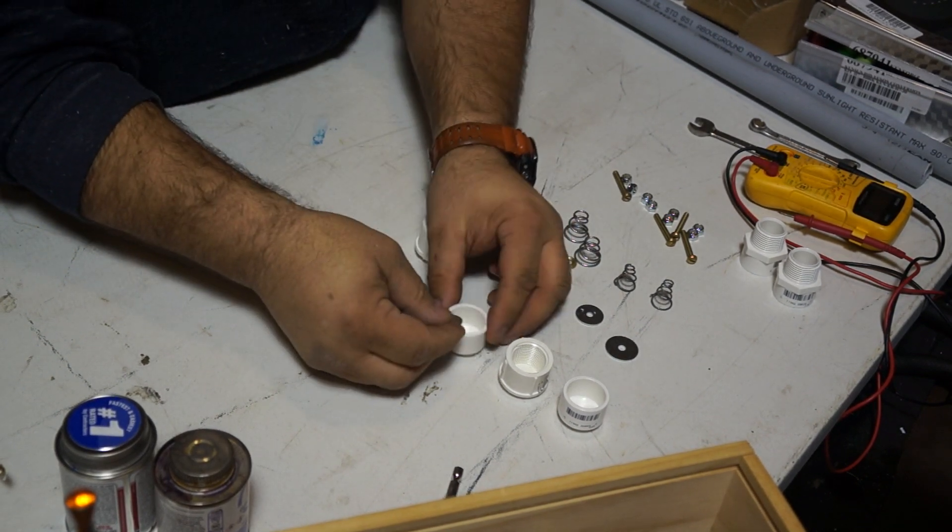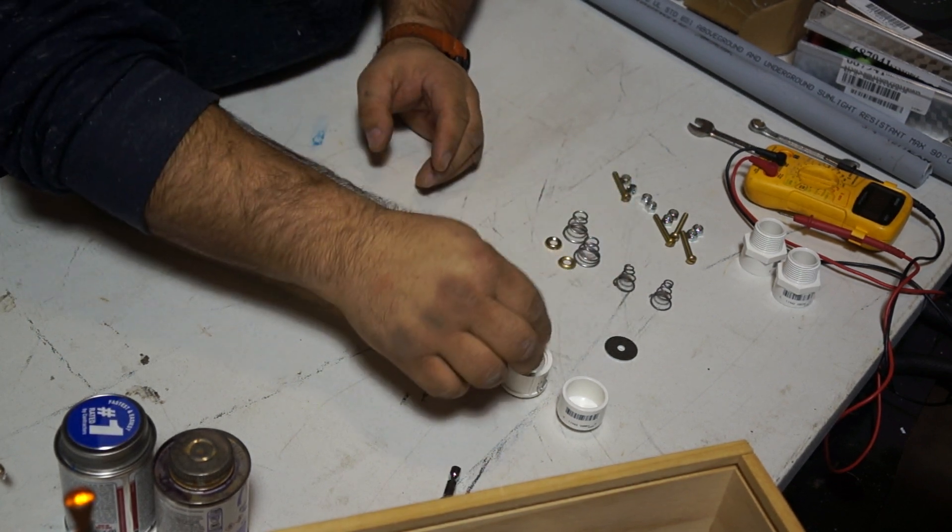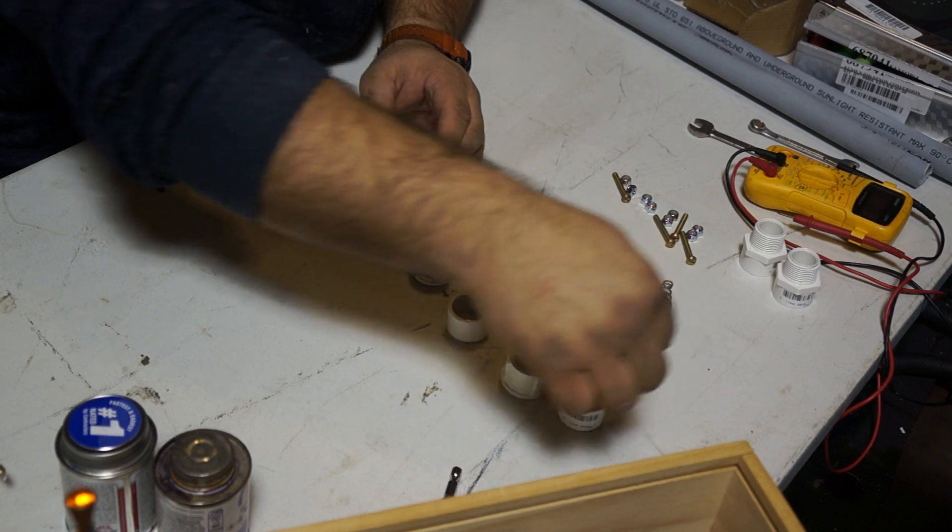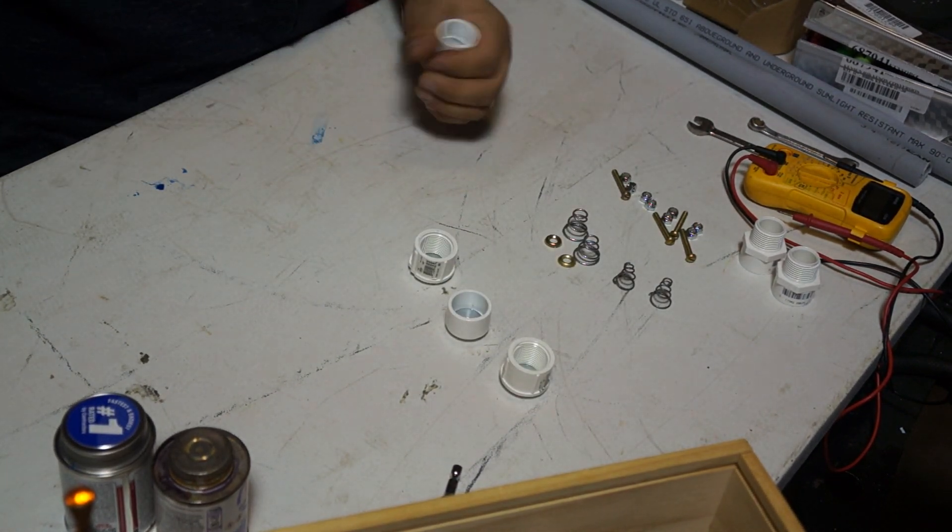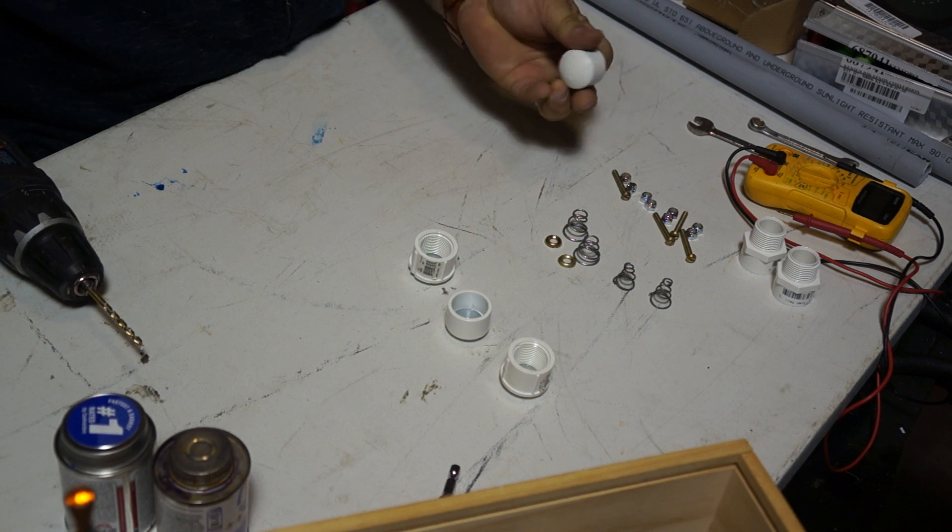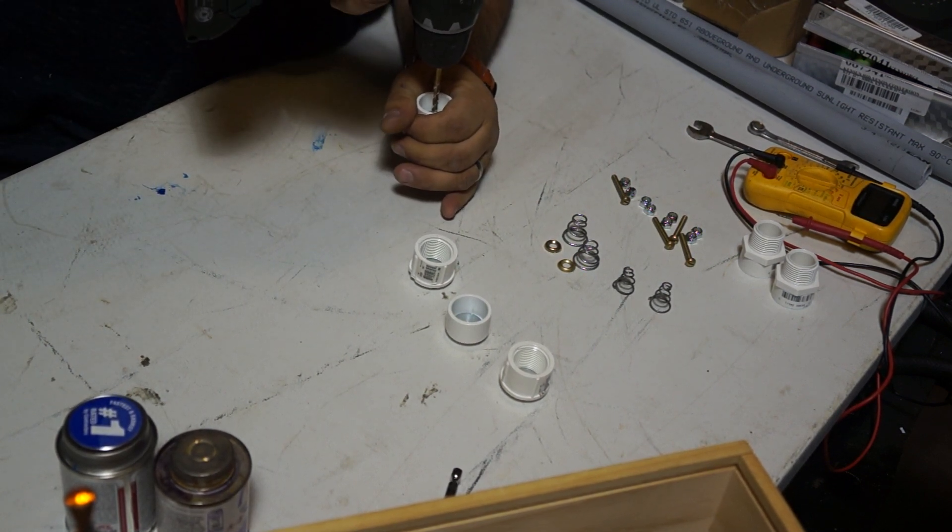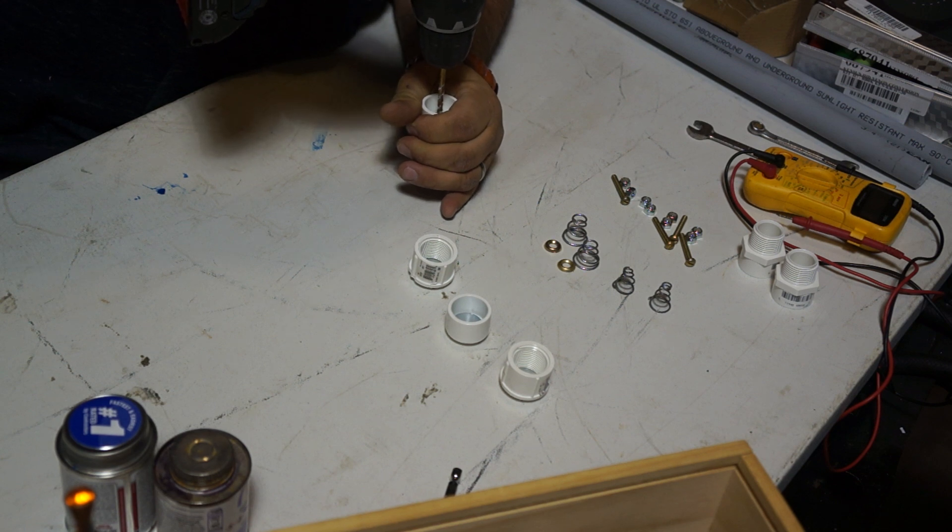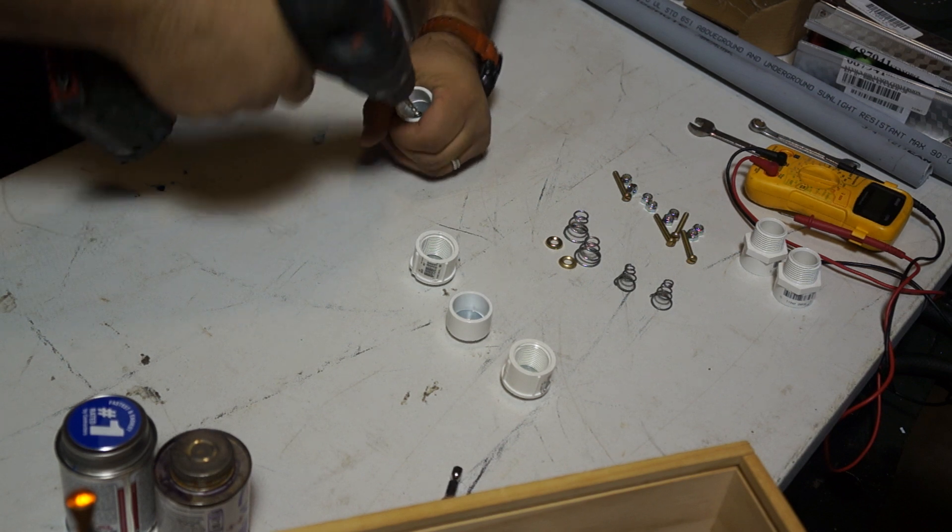Make sure you get some good washers that'll fit down in there nicely. These caps have different size washers that fit them. Then you drill a hole down the center of the cap very carefully. Don't hurt yourself. Use the washer as your guide and drill a hole directly in the center of the cap.